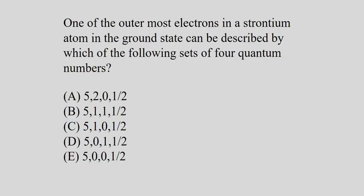Here's a question: one of the outermost electrons in a strontium atom in the ground state — which set of four quantum numbers describes it? Strontium ends in 5S2, so we have the fifth energy level, S subshell. If it's S, our azimuthal number L is zero — that rules out three of the options. If L is zero, then M sub L can only be zero. That leaves whatever our spin might be as our best answer.